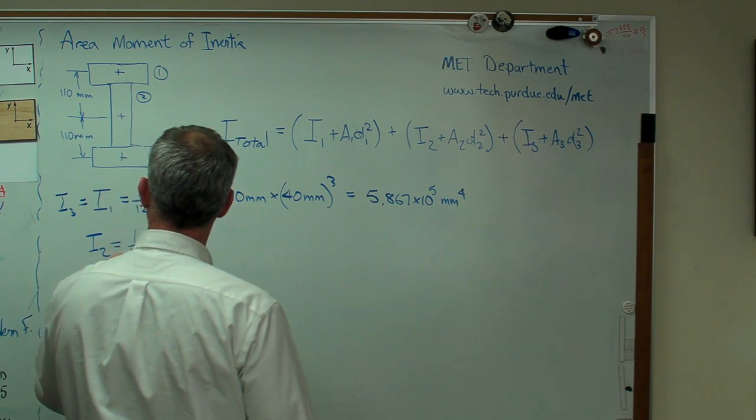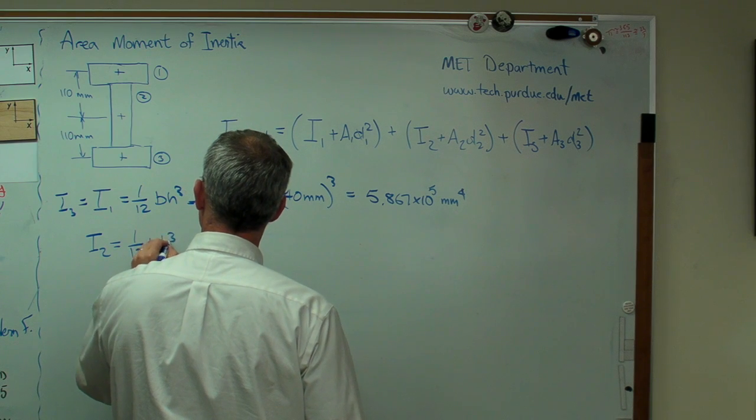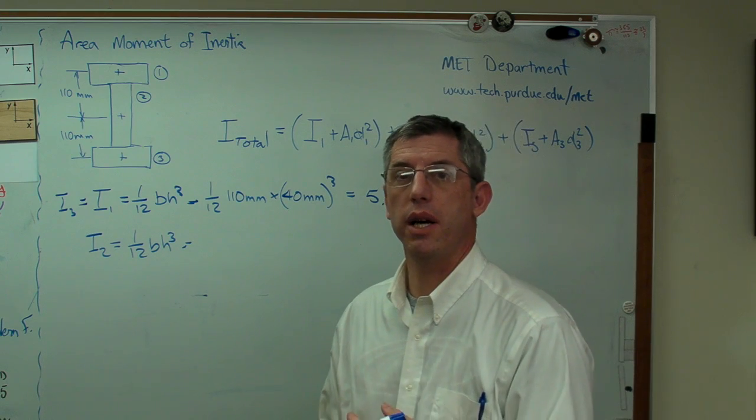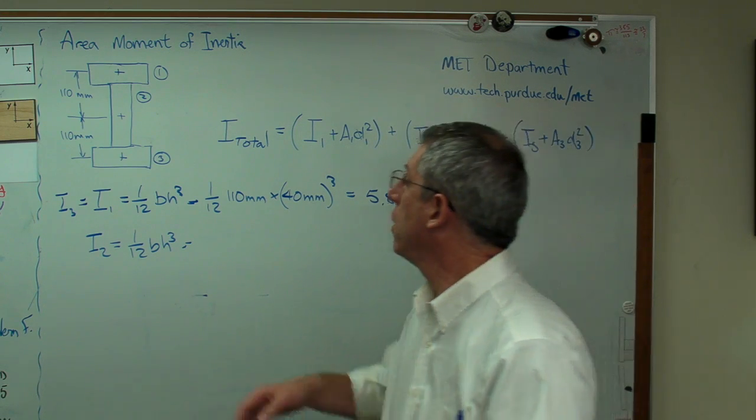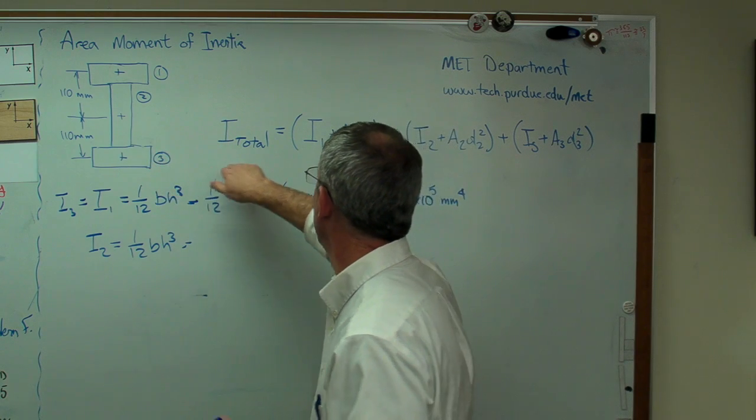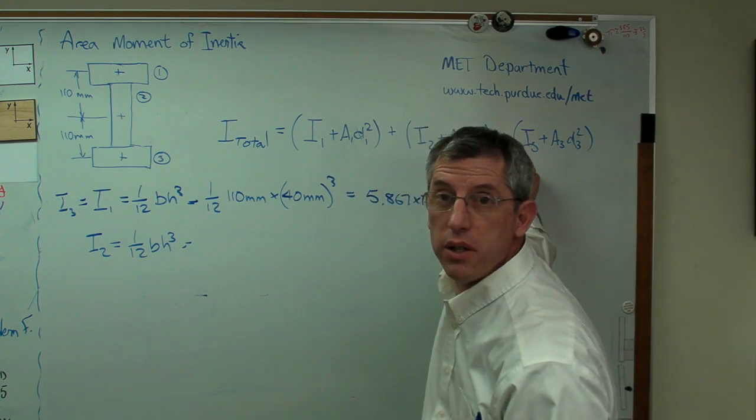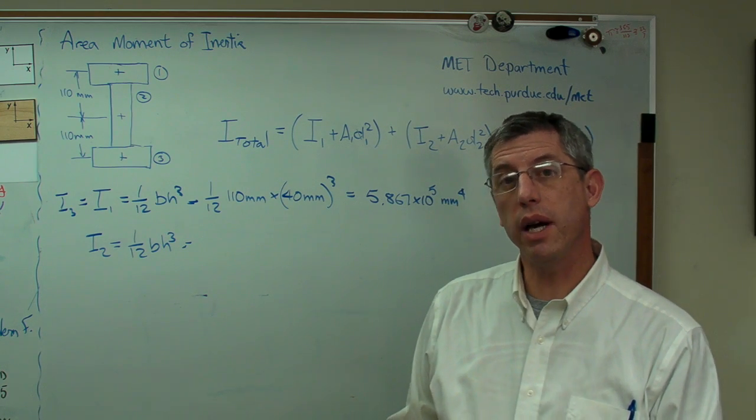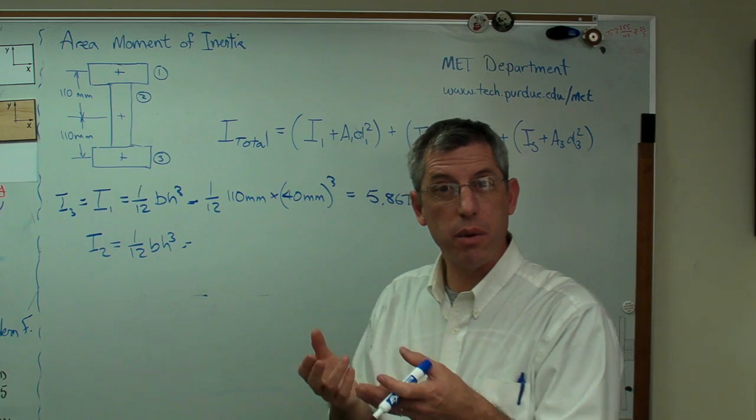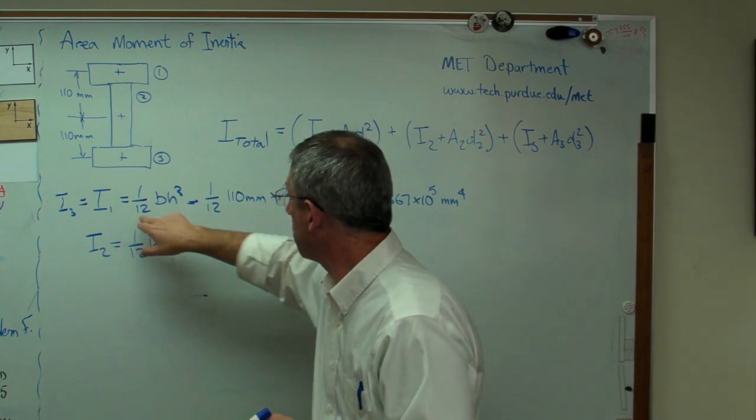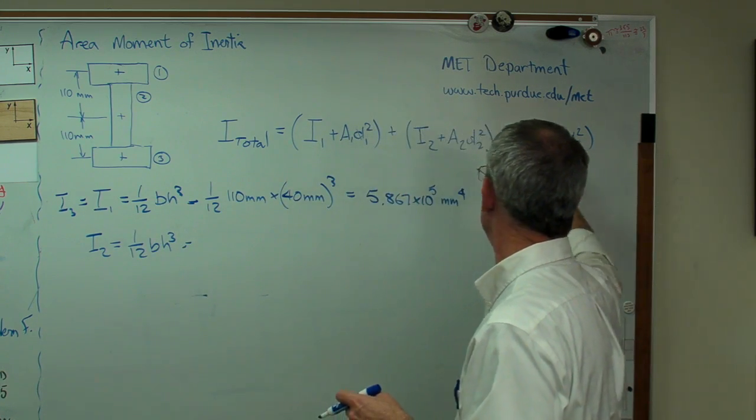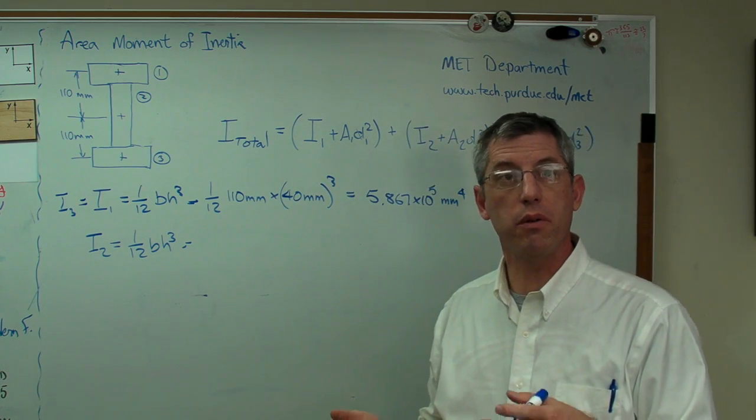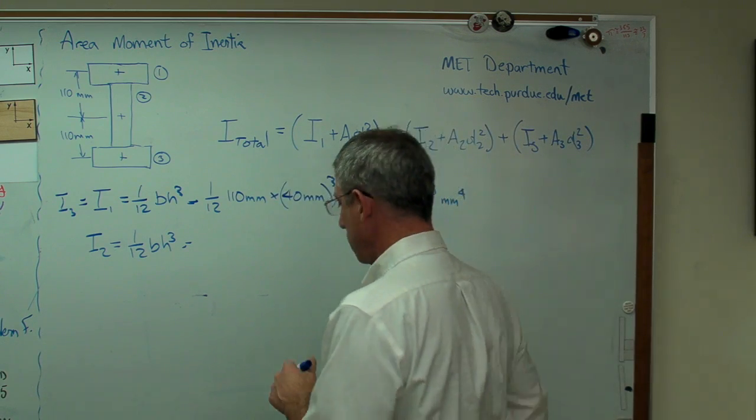So I2, same thing, 1 over 12 bh cubed. See how this is getting kind of routine? What I'm trying to show you here is this is a process, and the process is the same no matter what the cross sectional shape is. That equation never changes. These individual terms don't even need to correspond to rectangles. If you had some other shape, you'd use some other expression. But it's still I1, I2, I3. This is very flexible. Any shape you can define as being the sum of other shapes, you can do this way.